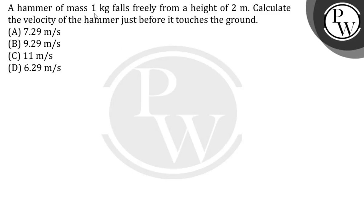The question given here is: a hammer of mass 1 kg falls freely from a height of 2 meters. Calculate the velocity of the hammer just before it touches the ground.